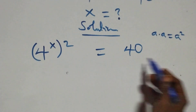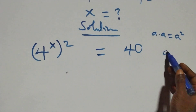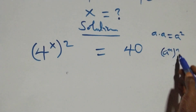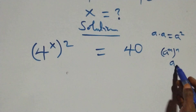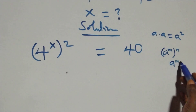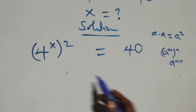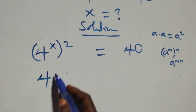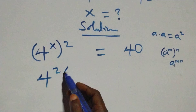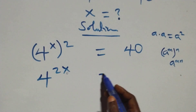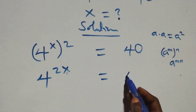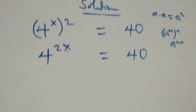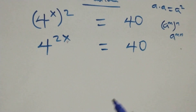Then also here, this follows when we have a raised to power n, all raised to power n — here we have a raised to power n, and this power multiplies. So we have 4 raised to power 2x equals 40 on this side.